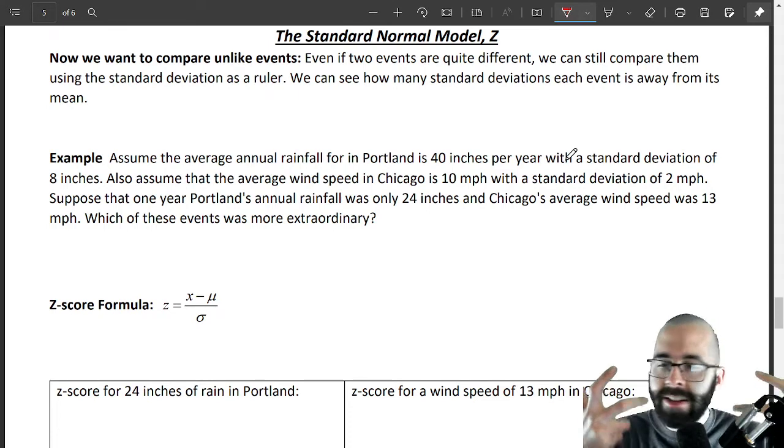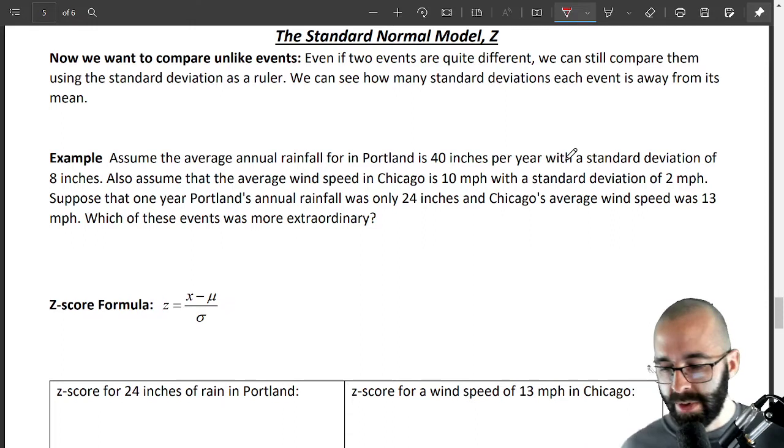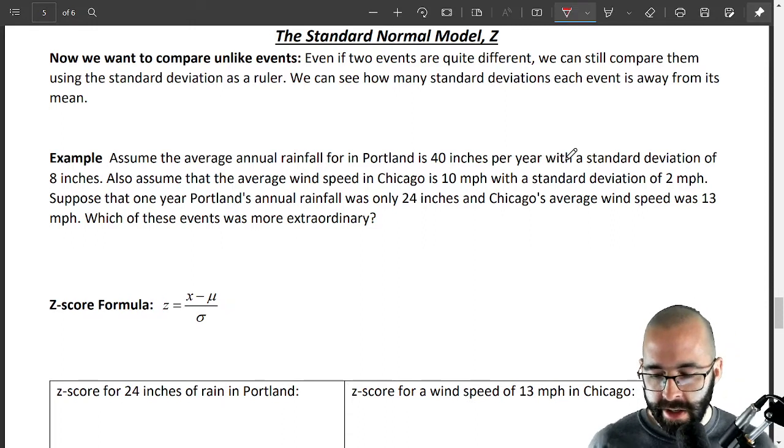We want to see what's more likely, what's more unlikely. How can we standardize these two different things? They are on different scales. It's kind of the same thing as like, you know, what's bigger, six inches or a third of a foot? Let's standardize these measurements, and that's what we're doing here.